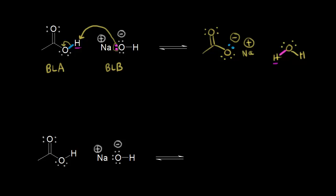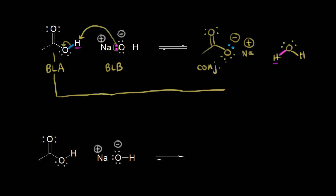And we could even identify conjugate acid-base pairs here. On the left, this was acetic acid — our Bronsted-Lowry acid. What is the conjugate base to acetic acid? Just take away a proton, and this would be the conjugate base. This is the acetate anion — so this is our conjugate base.